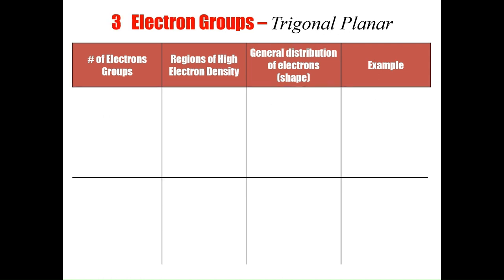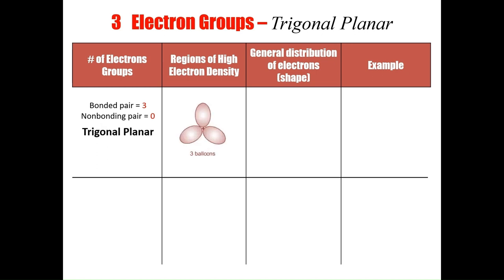The next geometrical arrangement is of three electron groups and takes the name trigonal planar. There are two possible molecular shapes for this arrangement. The first has three electron groups bonding to atoms, so the atoms are arranged in the same triangular shape as the electron groups — the molecular shape is also called trigonal planar. An example is boron trifluoride, BF3, which has 120 degree angles between all the electron groups.